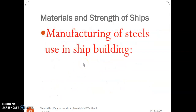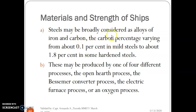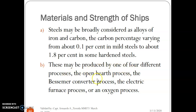Here are the different manufacturing processes for steel used in shipbuilding. Steel may be broadly considered as an alloy of iron and carbon, with the carbon percentage varying from about 0.1 percent in mild steels to about 1.8 percent in some hardened steels. Steel may be produced by one of four different processes: the open hearth process, the Bessemer converter process, the electric furnace process, or an oxygen process.